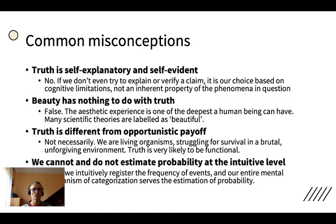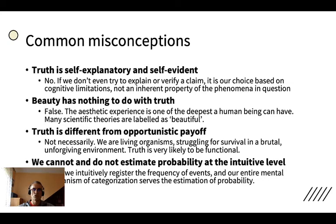I want to straighten out four common misconceptions about truth and the theory of truth in connection with this reflection about cities as demographic anomalies. The first misconception is that truth is self-explanatory and self-evident. This is false. If we don't even try to explain or verify a claim — if we simply take it for granted — it is just a reduction of our cognitive dissonance. We just give ourselves emotional comfort by assuming that something is self-explanatory and self-evident. But it is our choice based on our cognitive limitations and is not an inherent property of the phenomena that we observe.